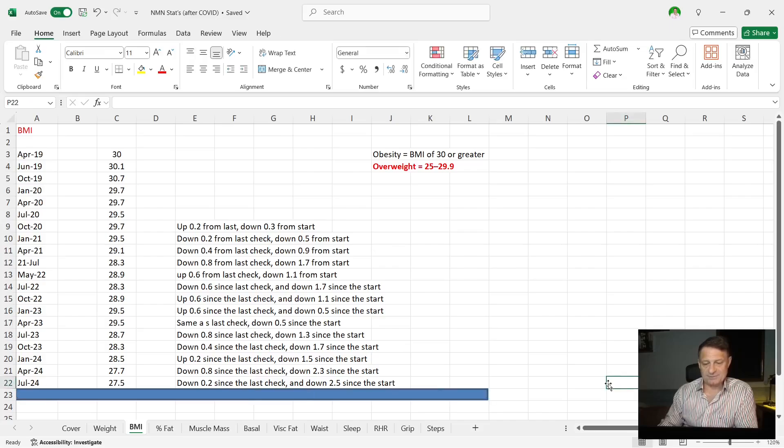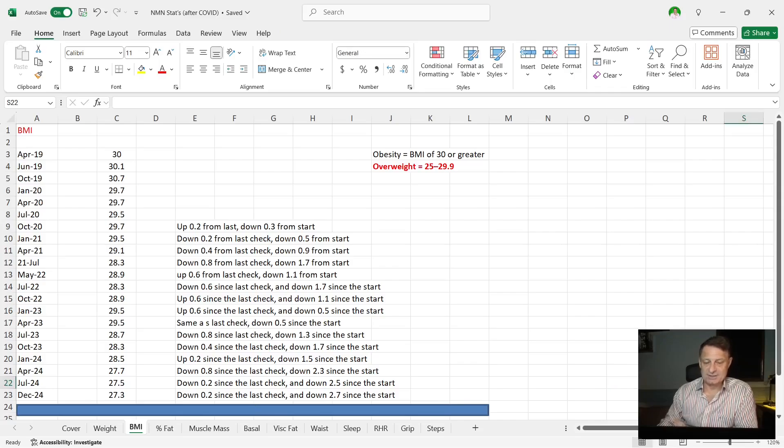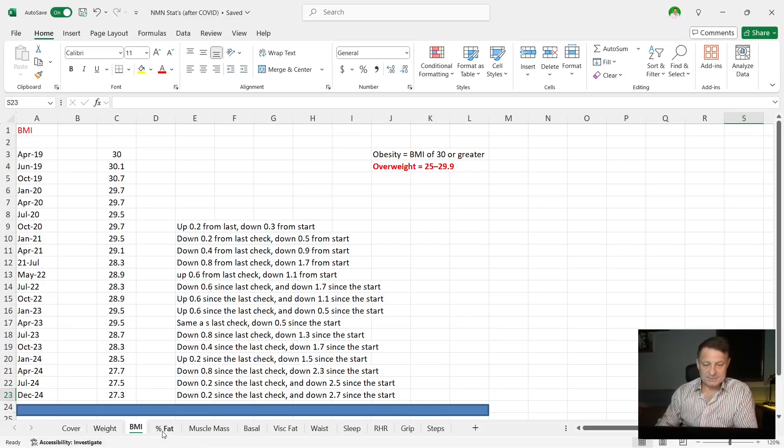BMI. My last check for my BMI was 27.5. It is now 27.3. So not a great drop, but heading in the right direction down 0.2 since the last check down 2.7 since the start. And you know, I don't put much weight in the BMI check, BMI test because it treats fat and muscle exactly the same in the formula. And they're certainly not the same compounds. 27.3 still has me technically as overweight.